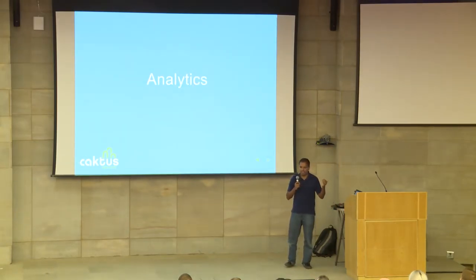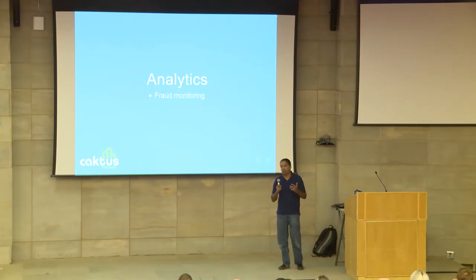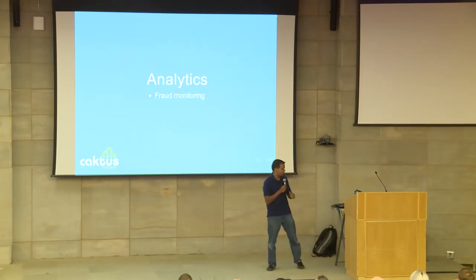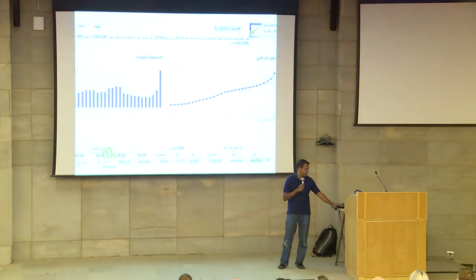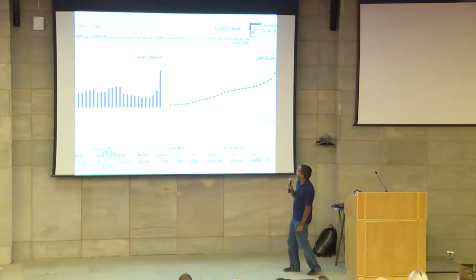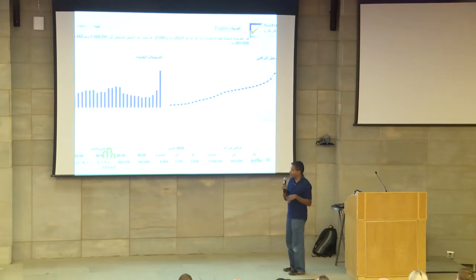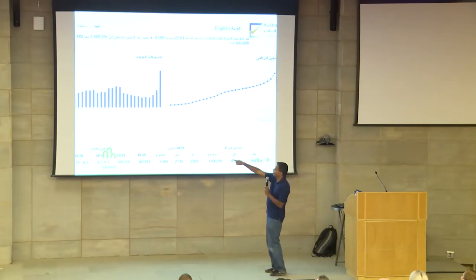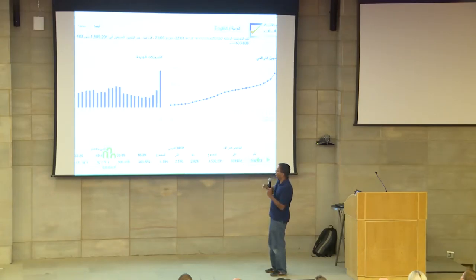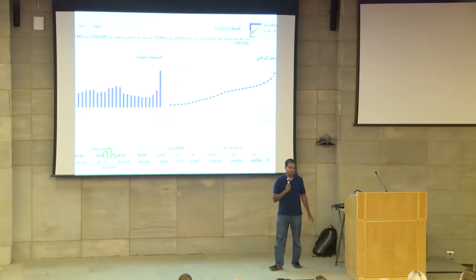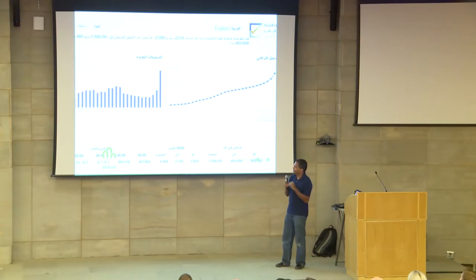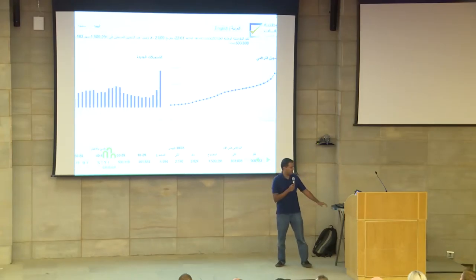We built analytics including fraud monitoring to make sure one phone number wasn't making many registrations. We built status reports including a chart publicly available at data.libyavotes.ly showing the number of registrations during the month of December, starting December 1st and continuing until December 31st — a very popular tool for people in Libya to see how things were going. You can tell everyone wants to register on the last day.